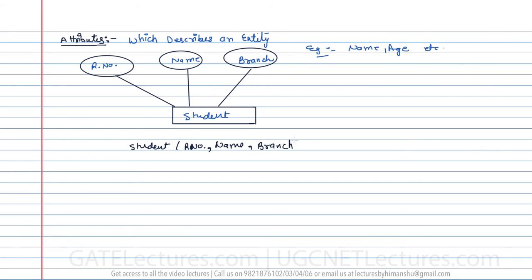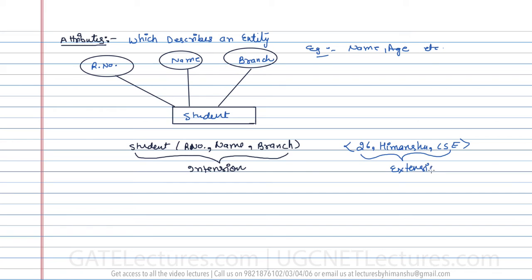Representing the student entity with its attributes — roll number, name, and branch — is called intension. But if I give exact values, like roll number is 26, name is Himanshu, and branch is Computer Science, these are the exact values. This particular instance is also called extension. Intension means representing the entity and its attributes, while a particular instance with actual values is called extension.